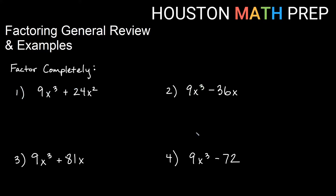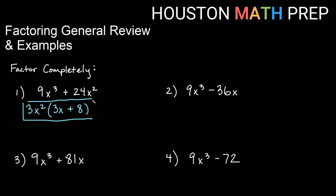Here we'll look at some two-term examples. Our first one is 9x cubed plus 24x squared. Looking for the greatest common factor first: 9 and 24 both have a common factor of 3, and x cubed and x squared both have at least x squared. So I factor out 3x squared. 3x squared times 3x gives 9x cubed, and 3x squared times 8 gives 24x squared. Left with 3x plus 8, which cannot be factored further. Answer: 3x squared times the quantity 3x plus 8.